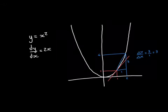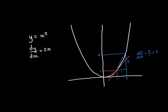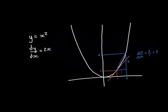How do we work out the gradient of this secant line? Delta x is clearly 1, delta y is 4 take away 1 which is 3, so 3 divided by 1 equals 3. The gradient of that secant line is 3, and that's a reasonable approximation to the gradient of the tangent line in red.